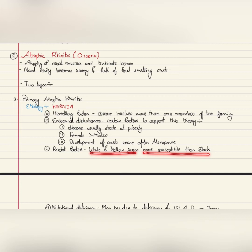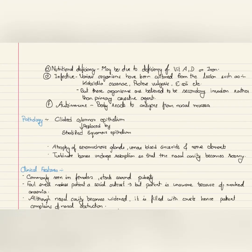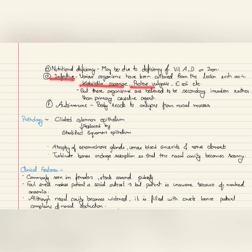N is for nutritional deficiency, where deficiency of vitamin A, D, or iron is believed to cause atrophic rhinitis. Infective agents such as Klebsiella ozaenae, Proteus vulgaris, and E. coli are also believed to cause atrophic rhinitis, but these organisms are thought to be secondary invaders rather than the primary cause.